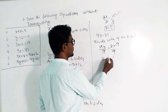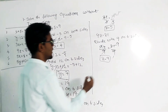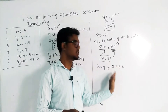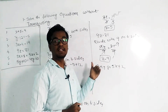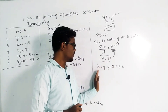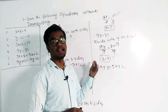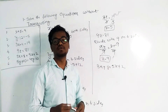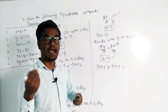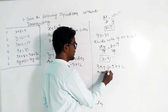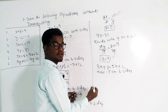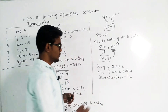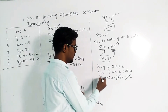Next one is 3x plus 8 equals 5x plus 2. Here both sides have variables and constants. We want variables on the left and constants on the right. To remove 5x from the right side, add minus 5x on both sides. 3x plus 8 minus 5x equals 5x plus 2 minus 5x; the 5x terms cancel.